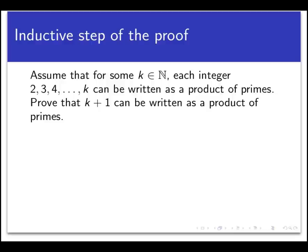So let's assume that for some natural number k, every integer between 2 and k, including 2 and including k, can be factored into a product of primes. This is the strong inductive hypothesis we're making here. We want to show that k plus 1 can be factored into a product of primes.